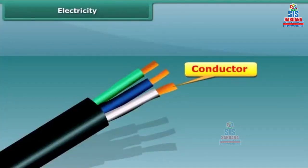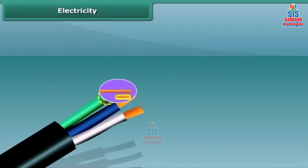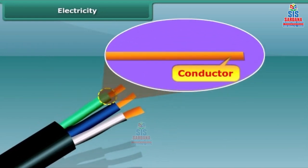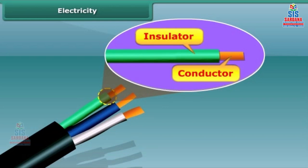Both conductors and insulators are important while using electricity. Conductors like copper or other metallic wires are used for electric supply. At the same time, these metallic wires are coated with insulating materials like plastic or rubber for safety.